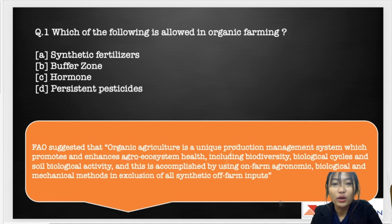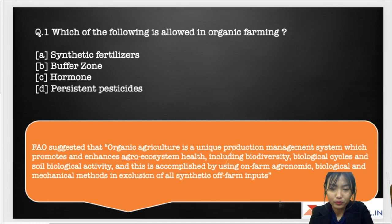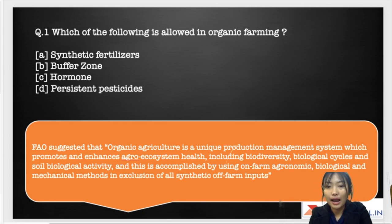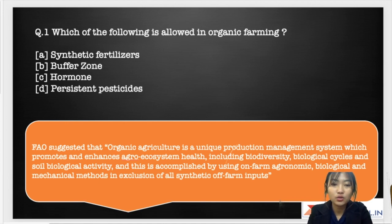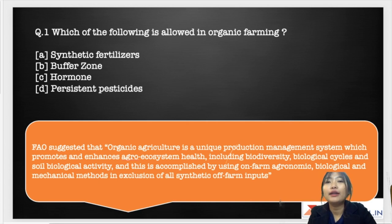Moving on to the first question: which of the following is allowed in organic farming? Before going to the options, one must know what organic farming is. According to FAO, organic agriculture is a unique production management system which promotes and enhances agro-system health including biodiversity, biological cycles, and soil biological activity, accomplished by using on-farm agronomic, biological, and mechanical methods in exclusion of all synthetic off-farm inputs.